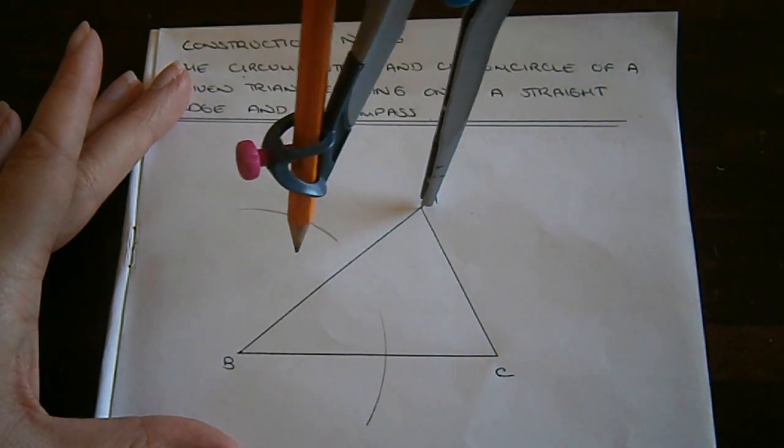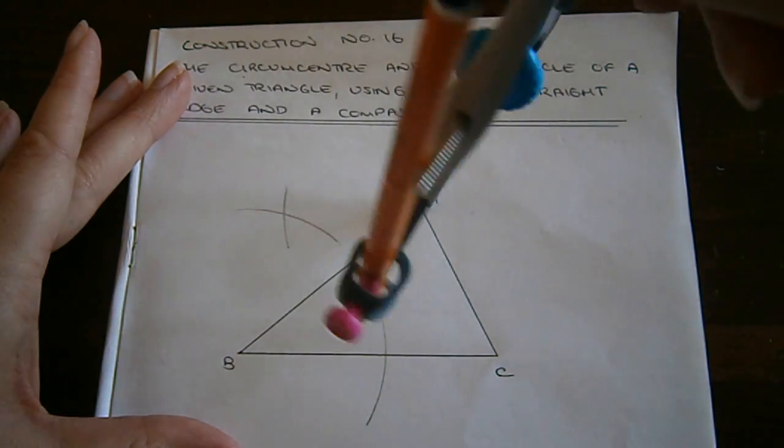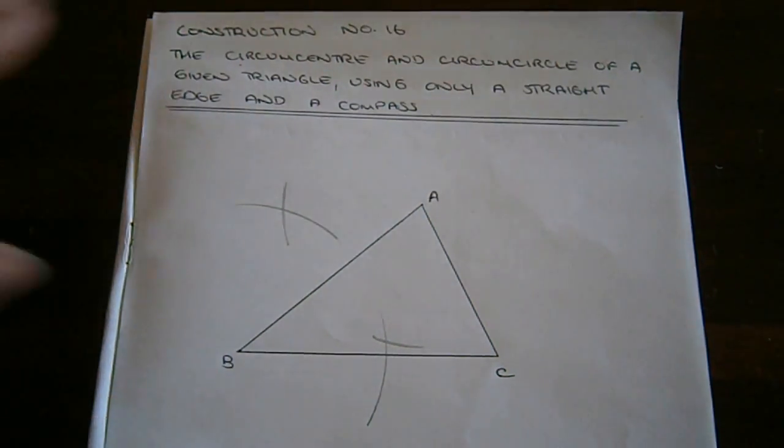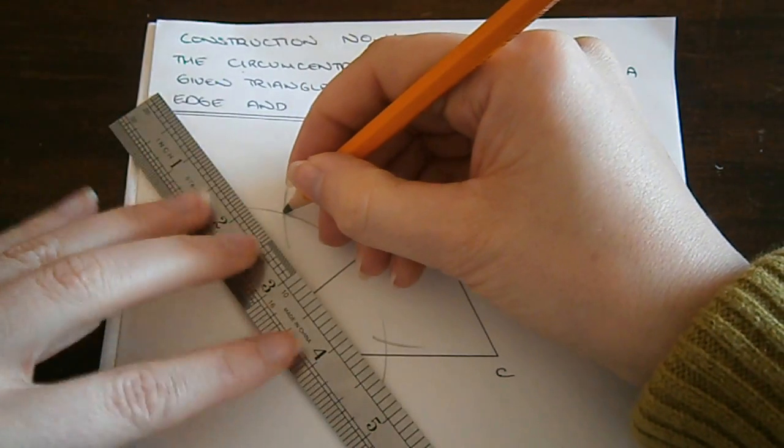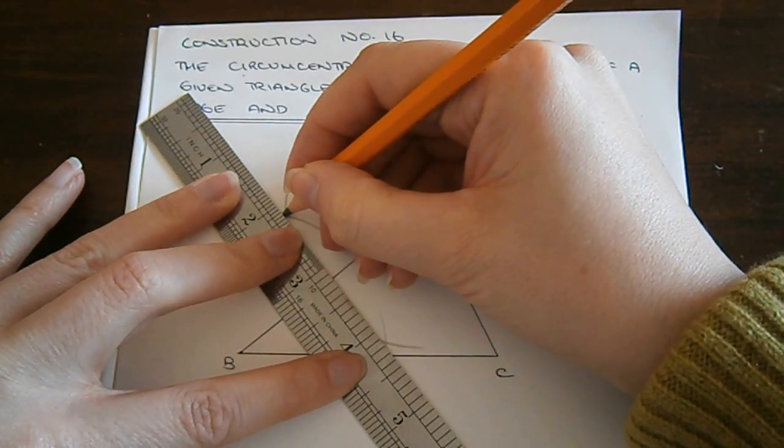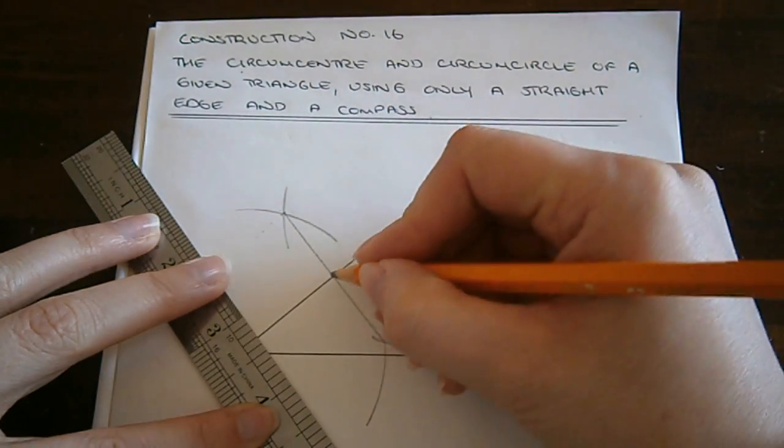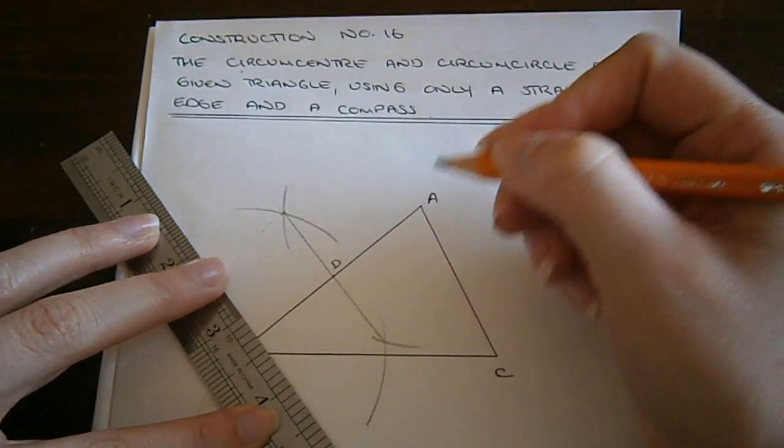I keep the compass the same width, put the point on A and do the same. I take my straight edge and join these intersection points. Let's call this point of intersection D.